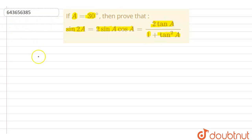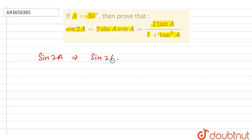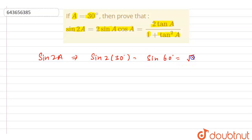Now let's first solve sin(2a). As we are given that the value of a is 30 degrees, we can write it as sin(2 × 30°), which equals sin(60°). And we know that sin(60°) equals √3/2.